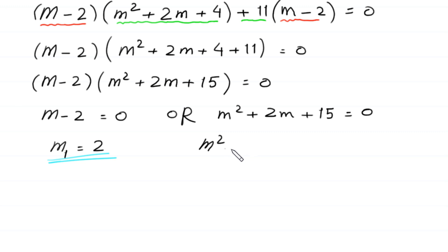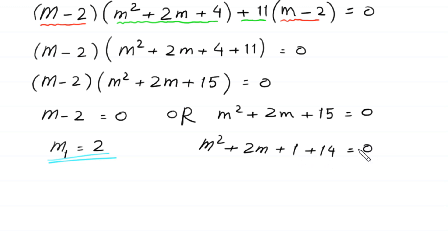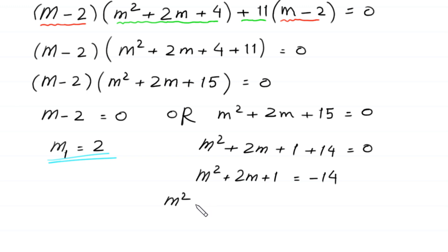For the quadratic m squared plus 2m plus 15 equals 0, we split 15 as 1 plus 14 and move the 14 to the right side: m squared plus 2m plus 1 equals negative 14. We can write the left side as m squared plus 2 times m times 1 plus 1 squared.